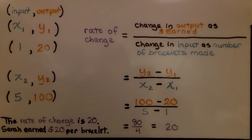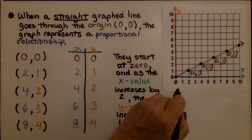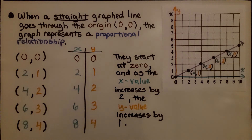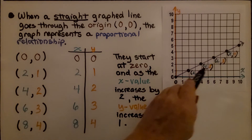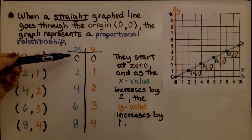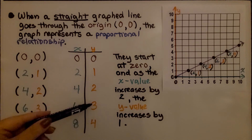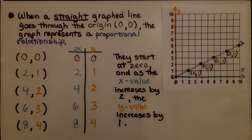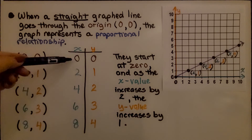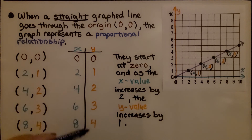We know Sarah earned $20 per bracelet. When a straight graphed line goes through the origin (0, 0), the graph represents a proportional relationship. Putting the ordered pairs into a table: (0,0), (2,1), (4,2), (6,3), (8,4). They start at the origin, and as the x value increases by 2, the y value increases by 1. That's a proportional relationship — it goes through the origin and is a straight line.